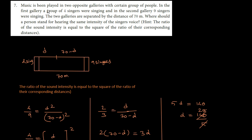Music has been played in two opposite galleries. Here's a gallery or stage. In the first gallery, a group of four singers were singing. In the second gallery, nine singers were singing. The two galleries are separated by a distance of 70 meters.